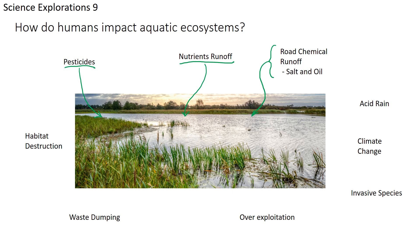Road chemicals such as salt and oil also run into aquatic ecosystems when it rains or snow melts in spring. Salt changes the salinity of the water, which is very detrimental to many aquatic organisms. Oil floats on the surface, acting like a seal that prevents oxygen from entering the water.